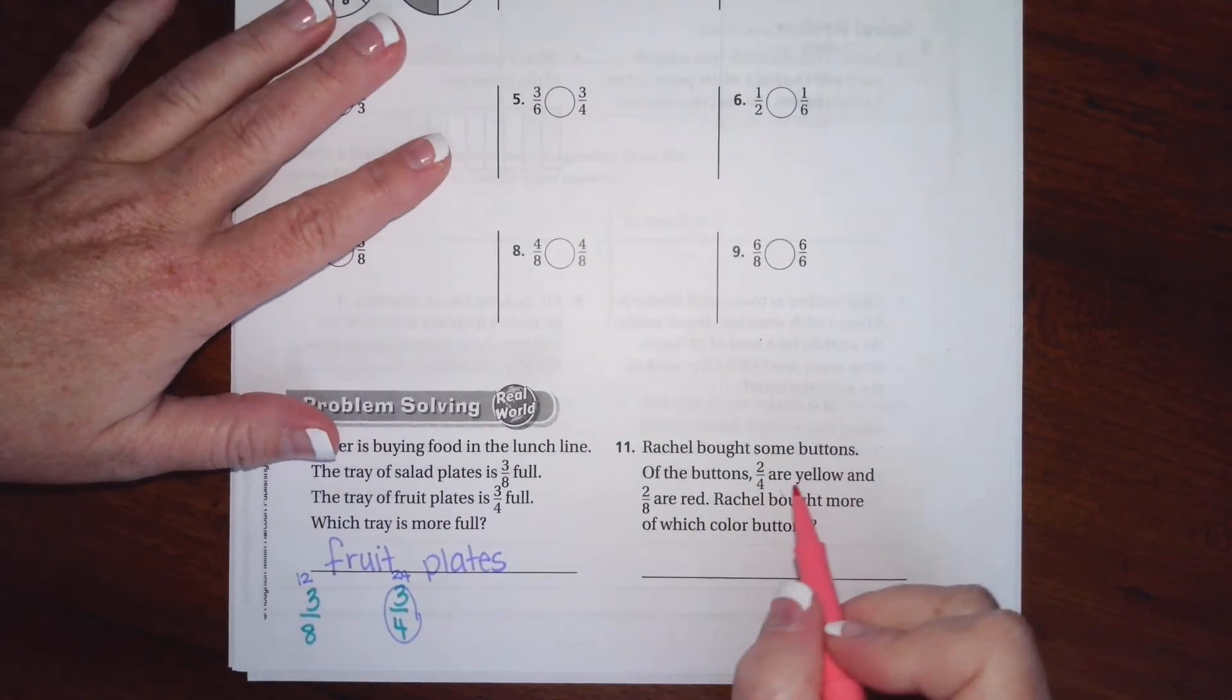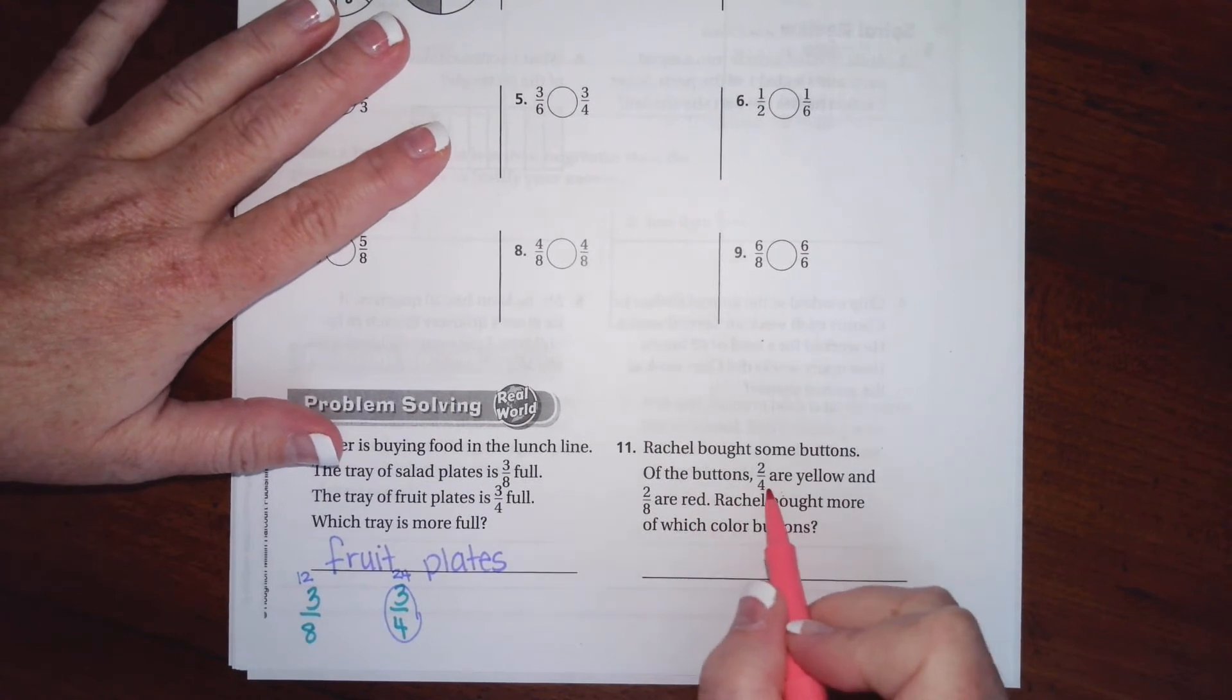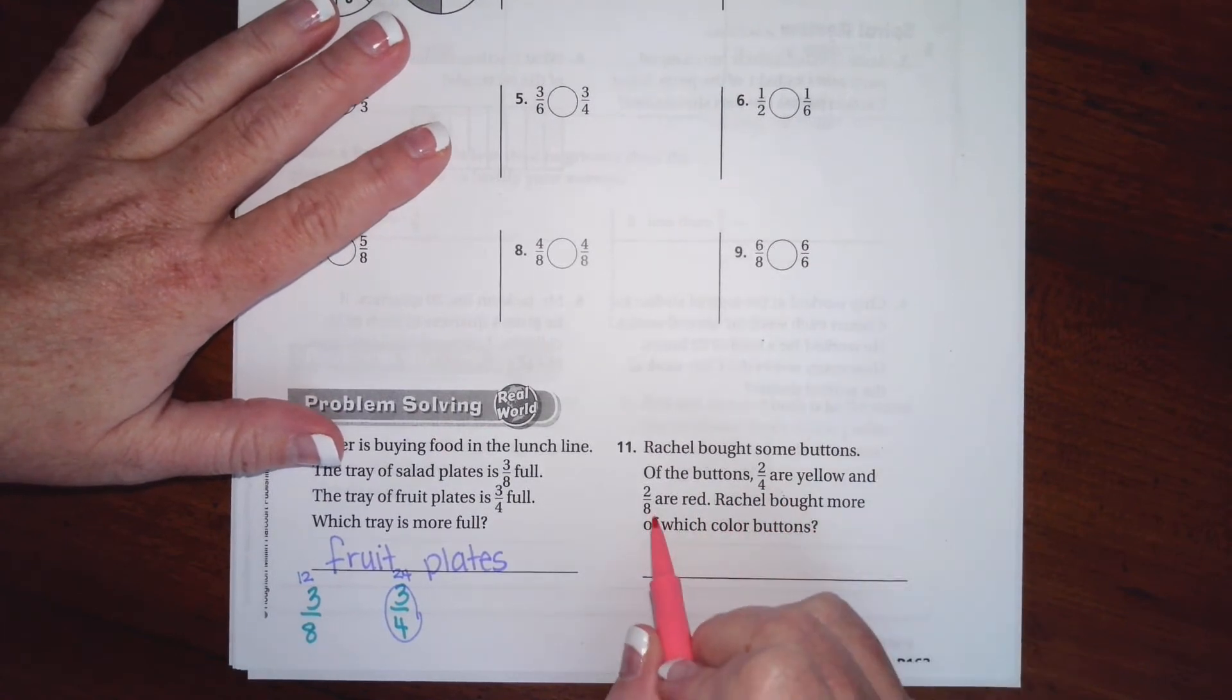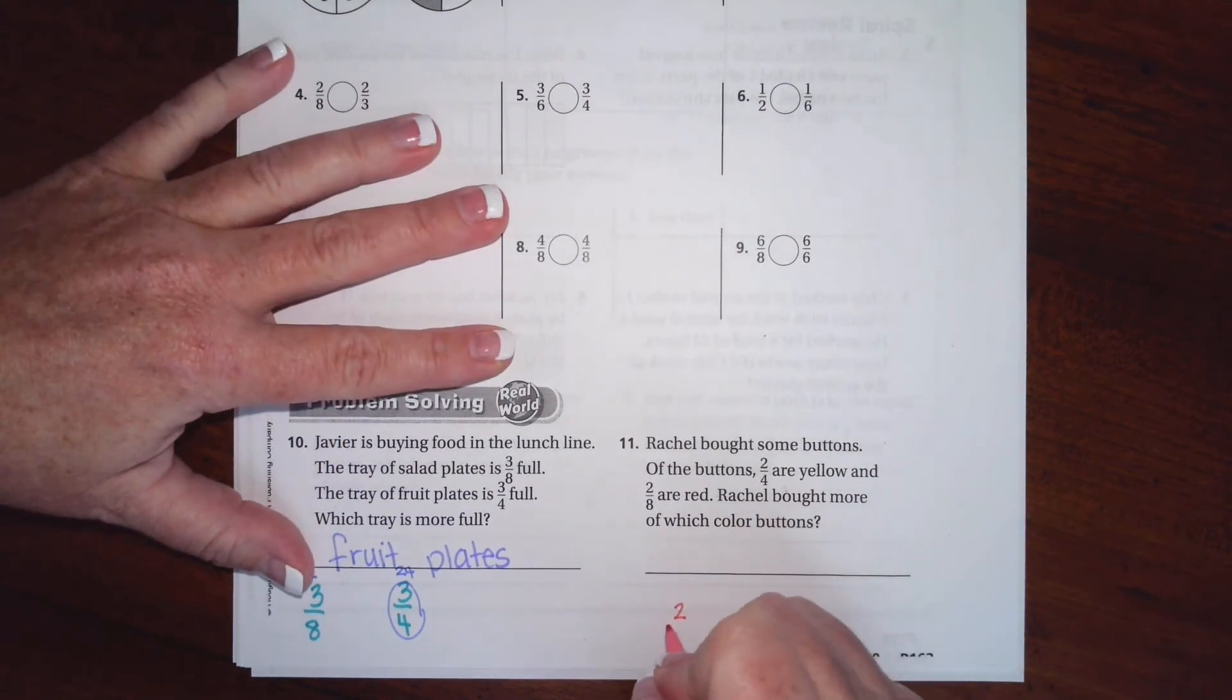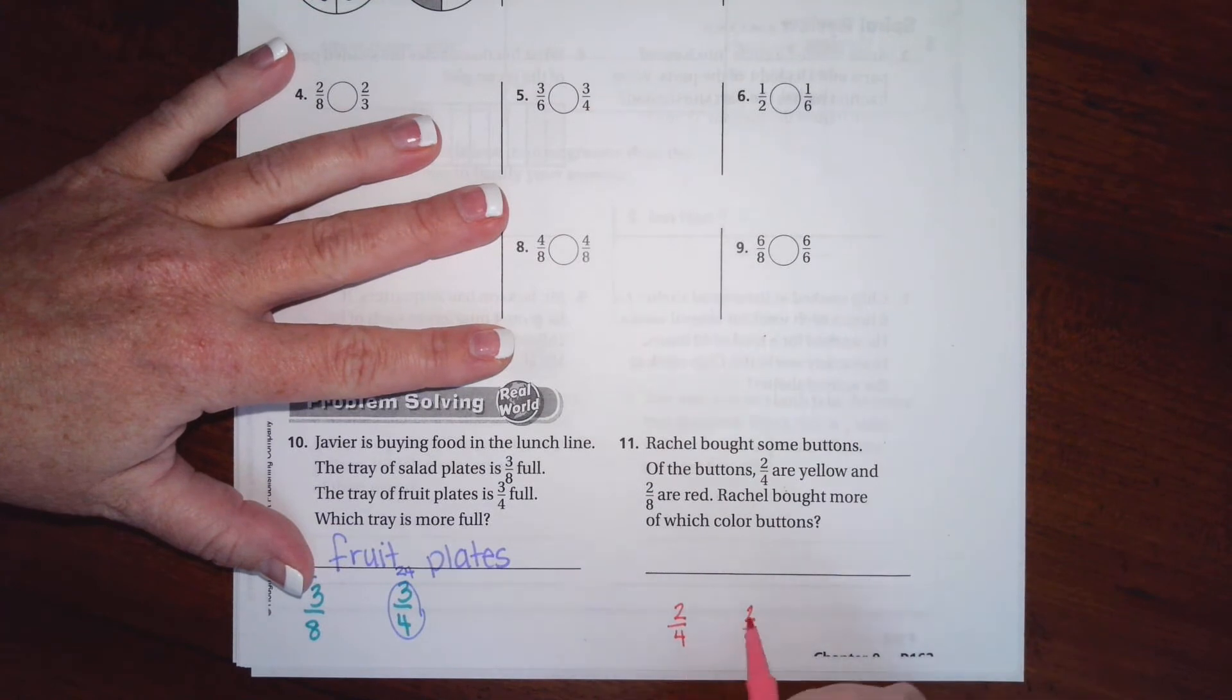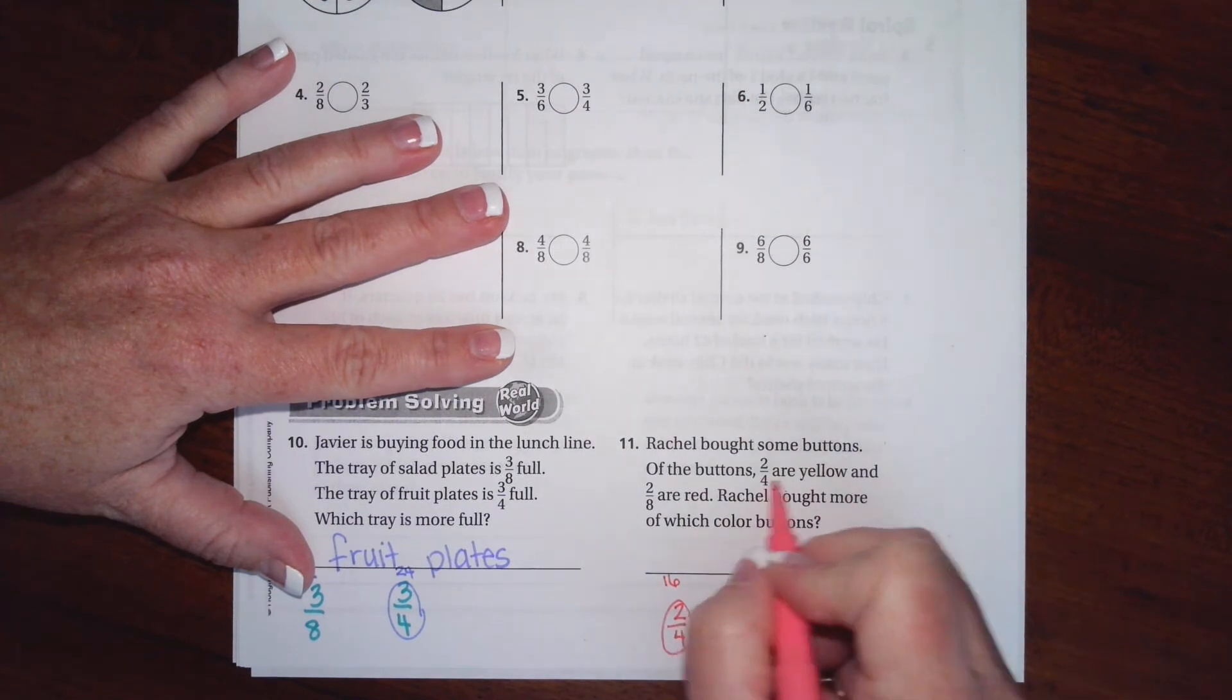Rachel bought some buttons. Of the buttons, two-quarters are yellow and two-eighths are red. Rachel bought more of which color button? Two-quarters, two-eighths. Four times two is eight, eight times two is 16. This one is bigger. That is yellow.